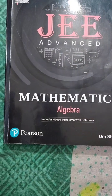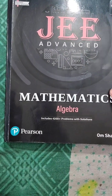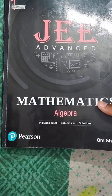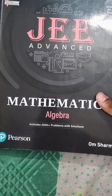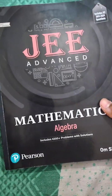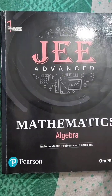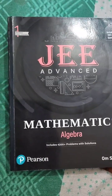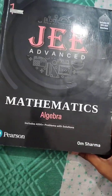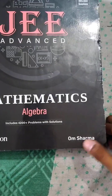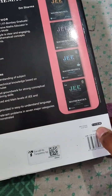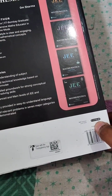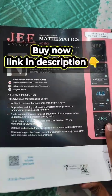Hello guys, in this video I will tell you how you can solve the Pearson JEE Advanced Mathematics book. Today I have the JEE Advanced Mathematics Algebra book by Pearson publication, authored by Om Sharma. The price is listed as eleven hundred ten rupees, but you can buy it under seven hundred on Amazon, Flipkart, or the official website Uplift Mathematics.